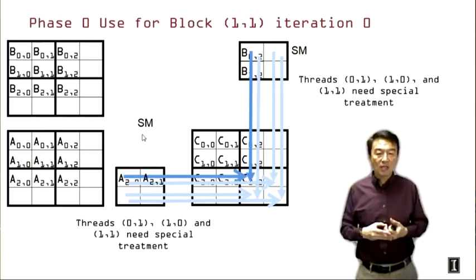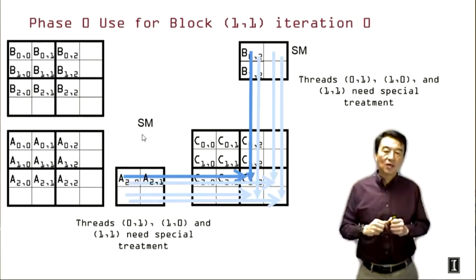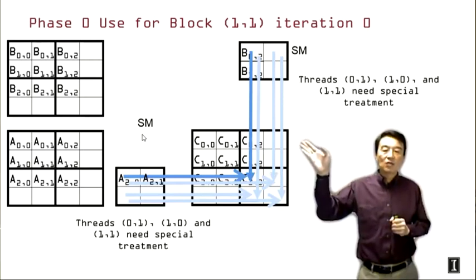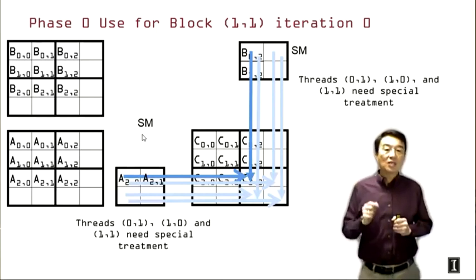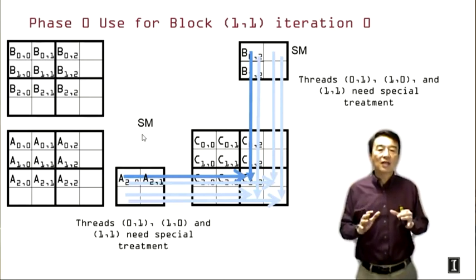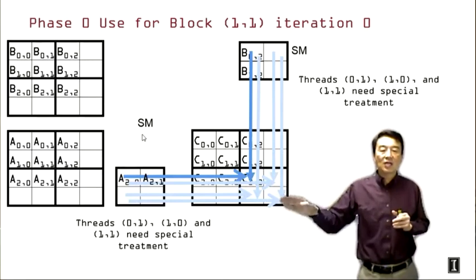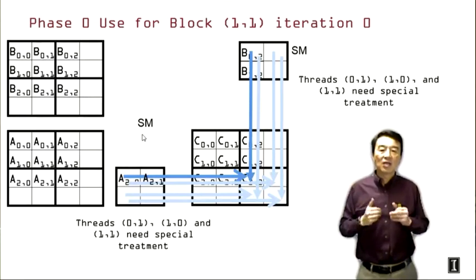So we definitely need to be very careful with that. And there's another subtle problem. If we look at block 0,1, one of the threads will attempt to write into C0,3, which in row major layout is going to be C1,0. And this is actually going to corrupt one of the C elements that another thread is supposed to be working on. So we definitely need to make sure that we don't let these threads either write outside the valid range or incorrectly write into another C element that is really being calculated by another thread.